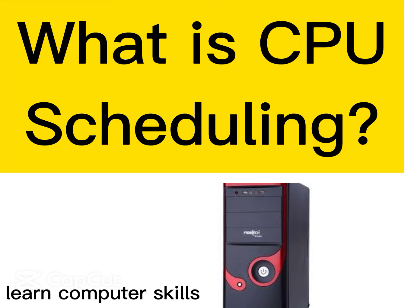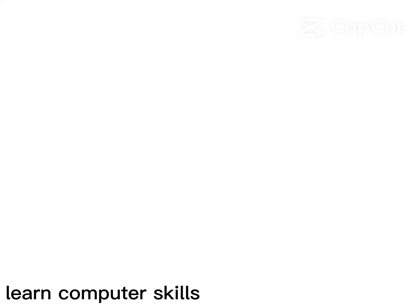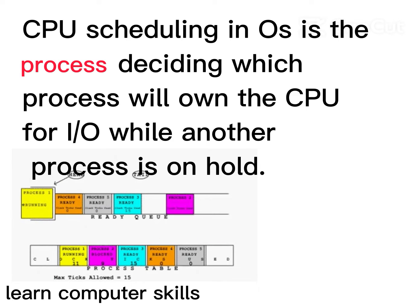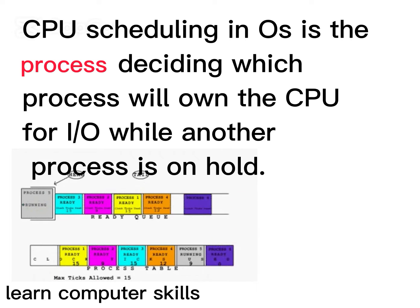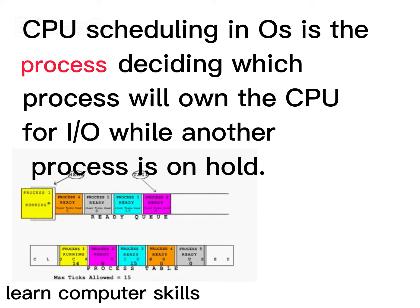What is CPU Scheduling in OS Operating System? CPU Scheduling in OS Operating System is the process of deciding which process will use the CPU for input-output operations and which process will wait for the input-output operations.